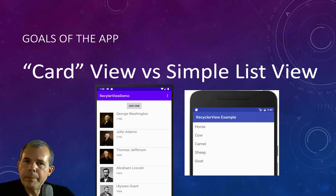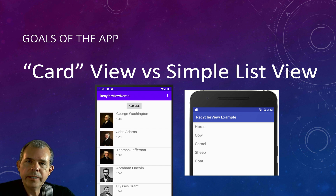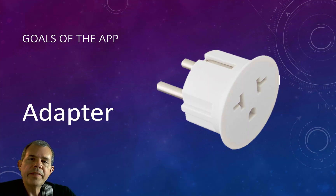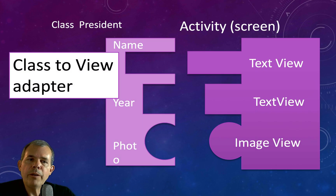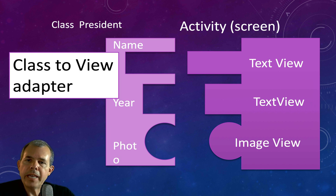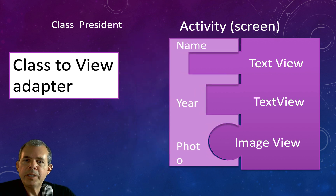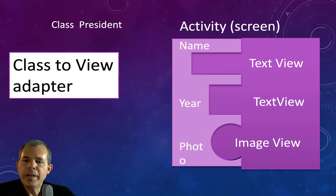A RecyclerView has different types. You can have a compound version, like a card, versus a simple layout, which is just a single line of text. The simple line of text is quick and easy, but the compound version is more complex. That's going to require us to use something called an adapter. An adapter is how you make a class, such as President, fit together with the layout, the activity, or the screen. The adapter takes properties like name, year, and photo and merges them with their proper components on the screen. That's called a class-to-view adapter.